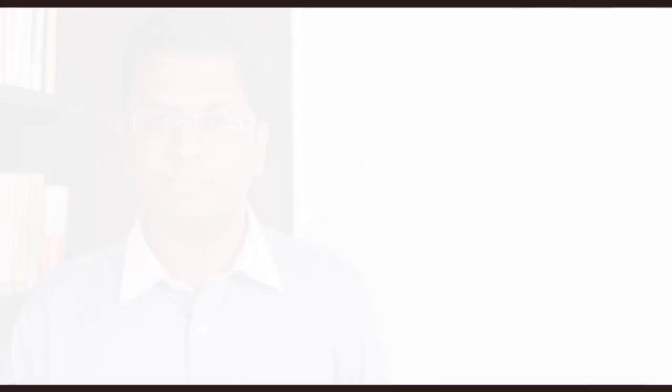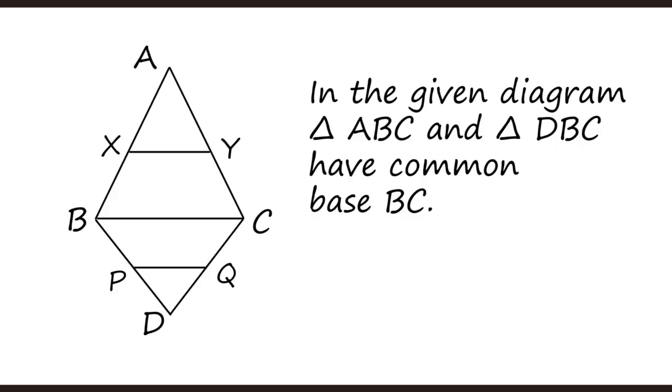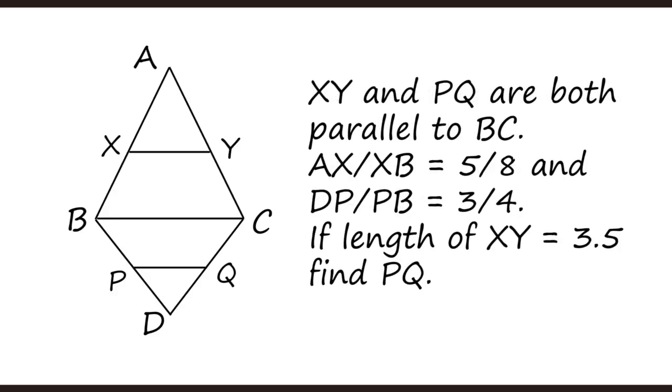Let us have a look at a problem now. In the given diagram, triangle ABC and triangle DBC have a common base BC. XY and PQ are both parallel to BC. AX upon XB is equal to 5 upon 8, and DP upon PB is equal to 3 upon 4. If the length of XY is 3.5, find PQ.